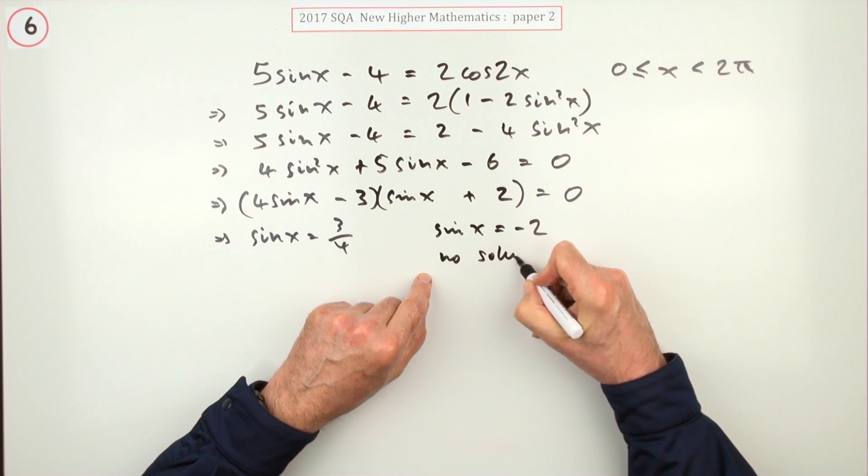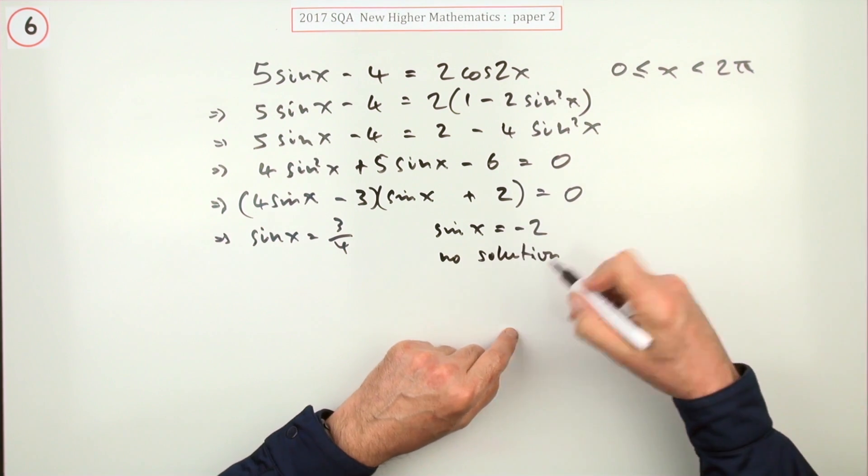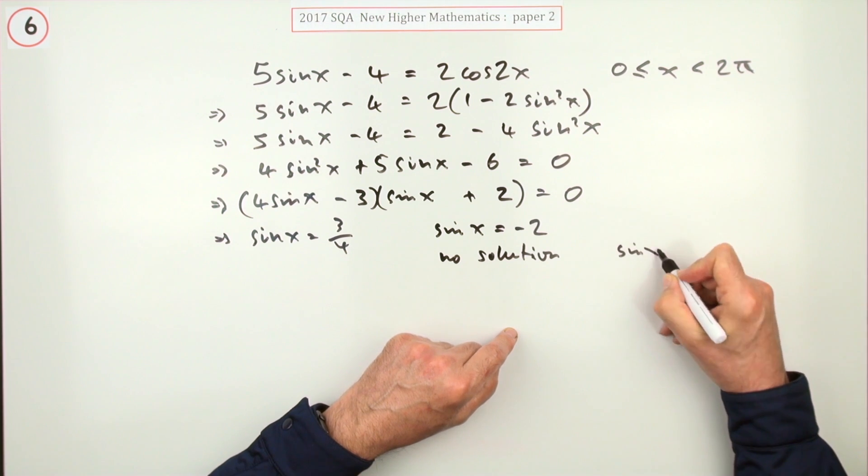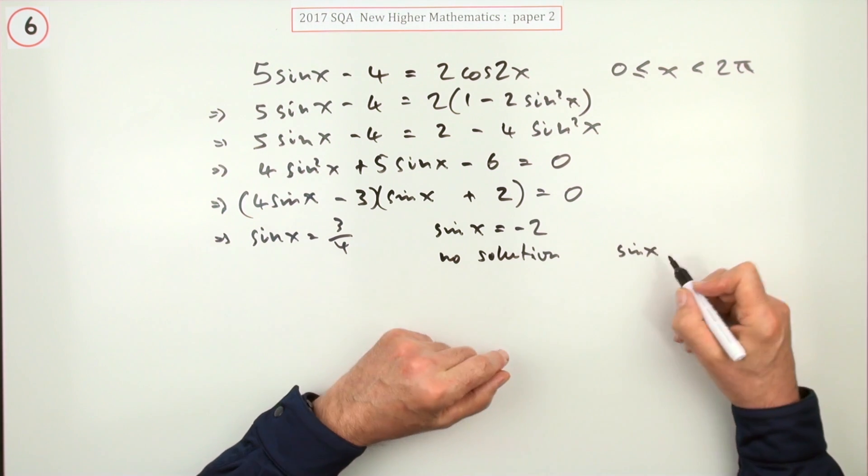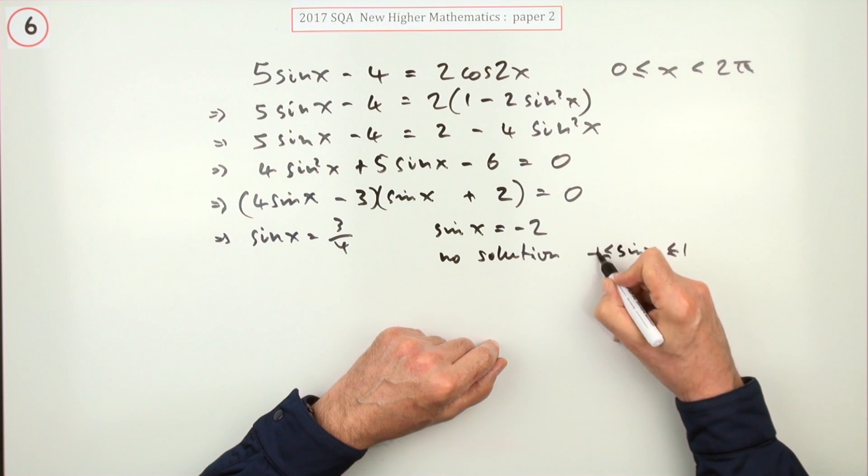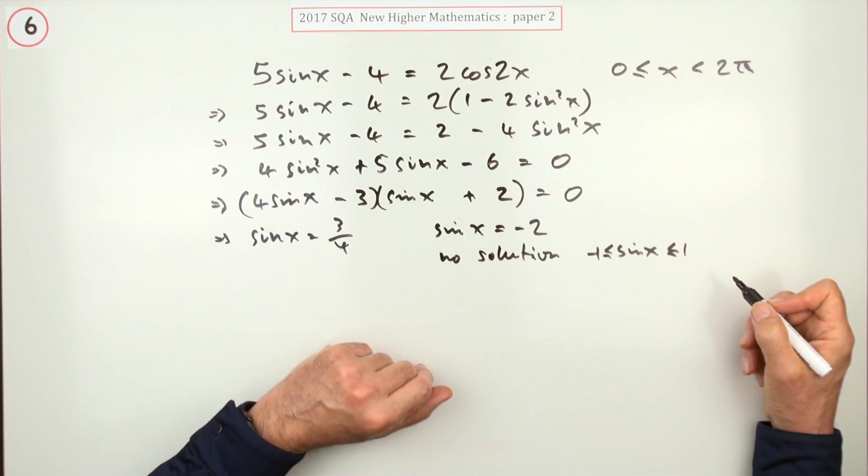Don't know if you have to justify that or not. Justifying it would mean to say something like, well, sinx has to be between one and negative one, and it's not there, so there's no solution for this one.